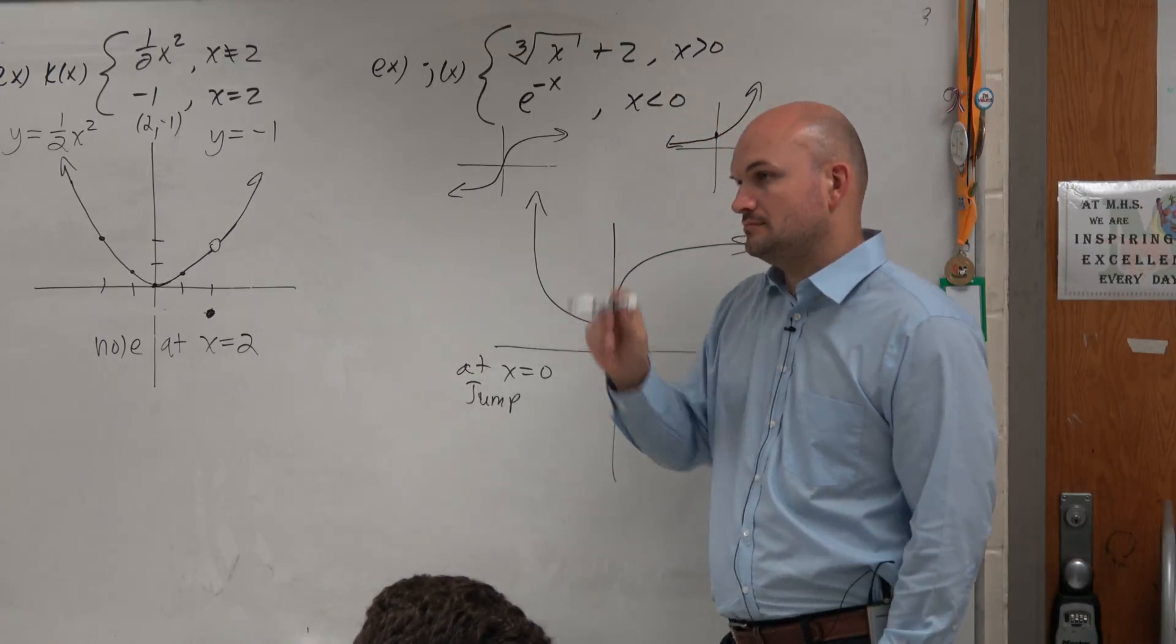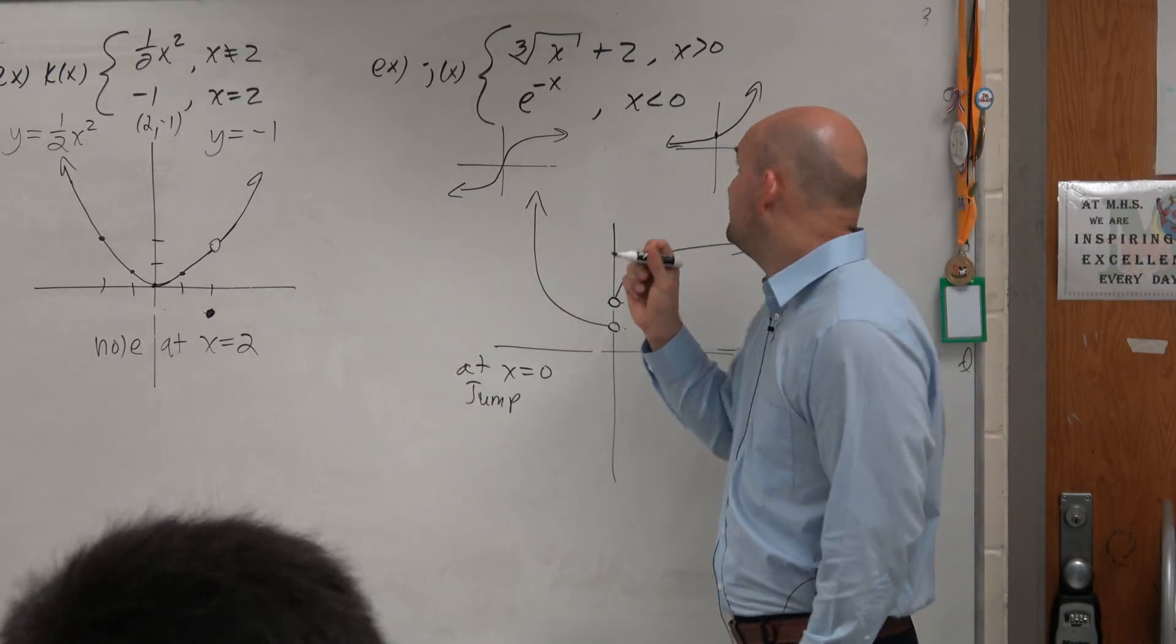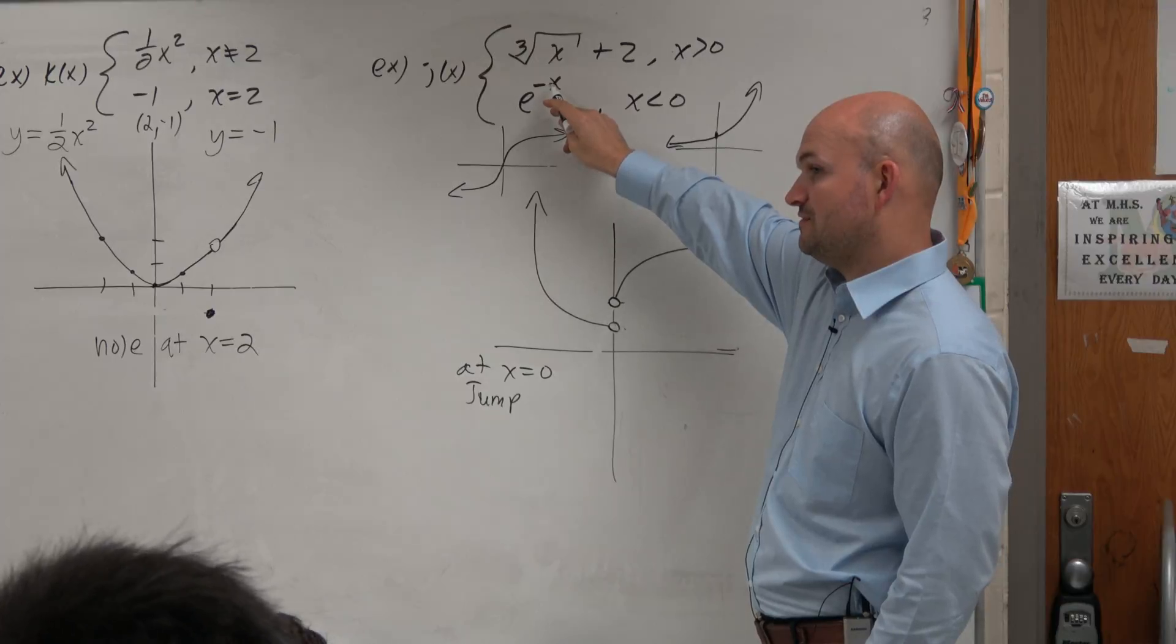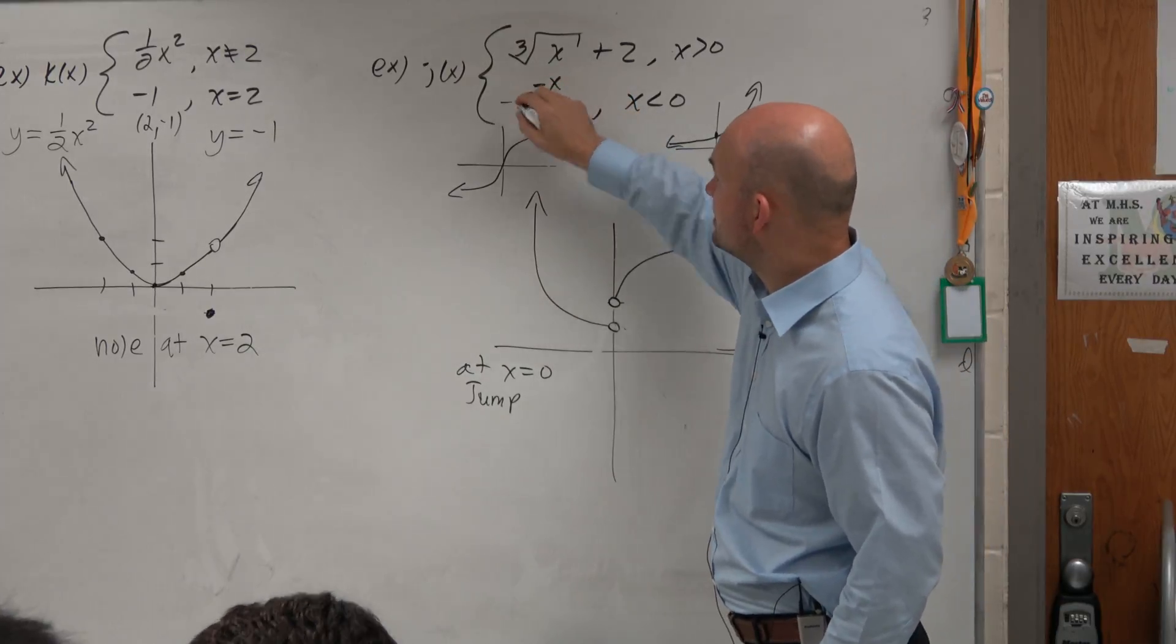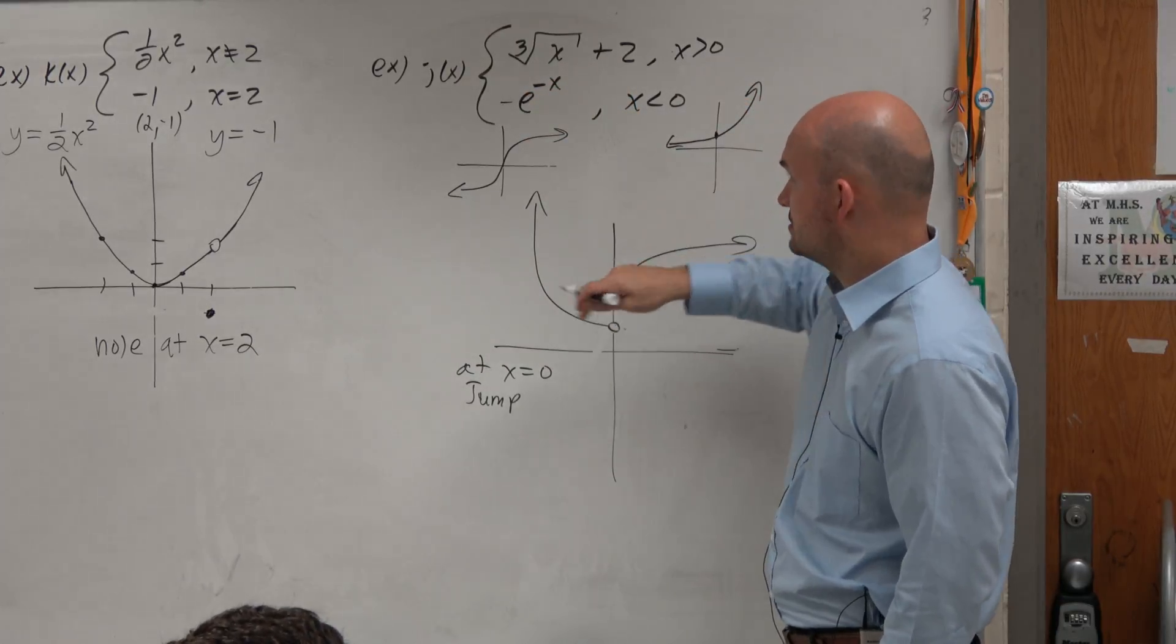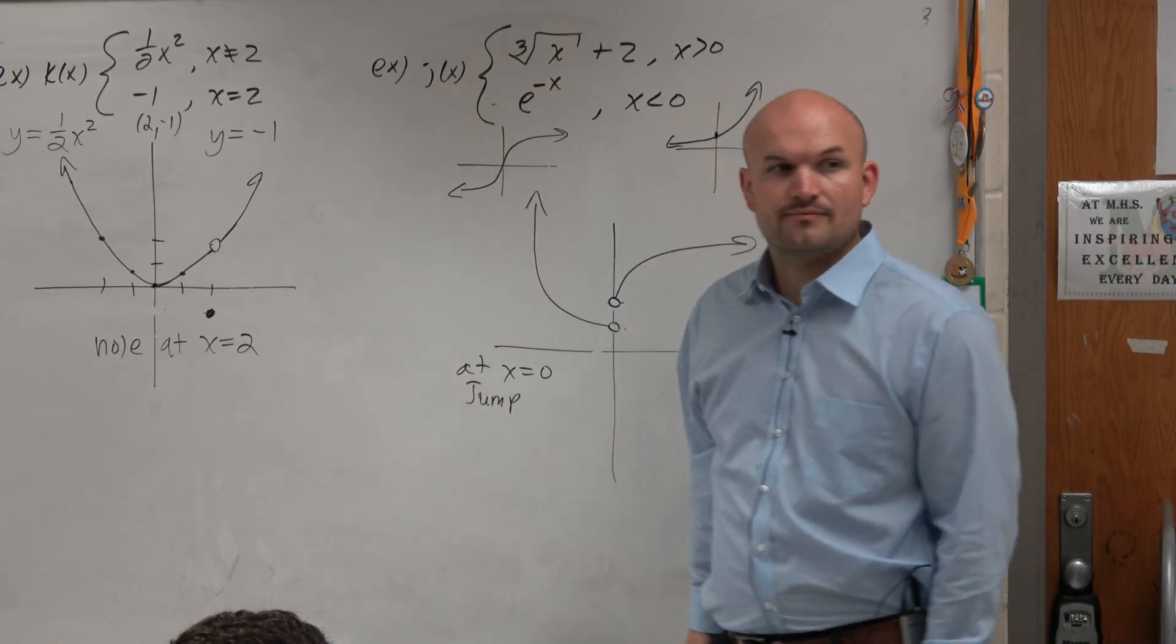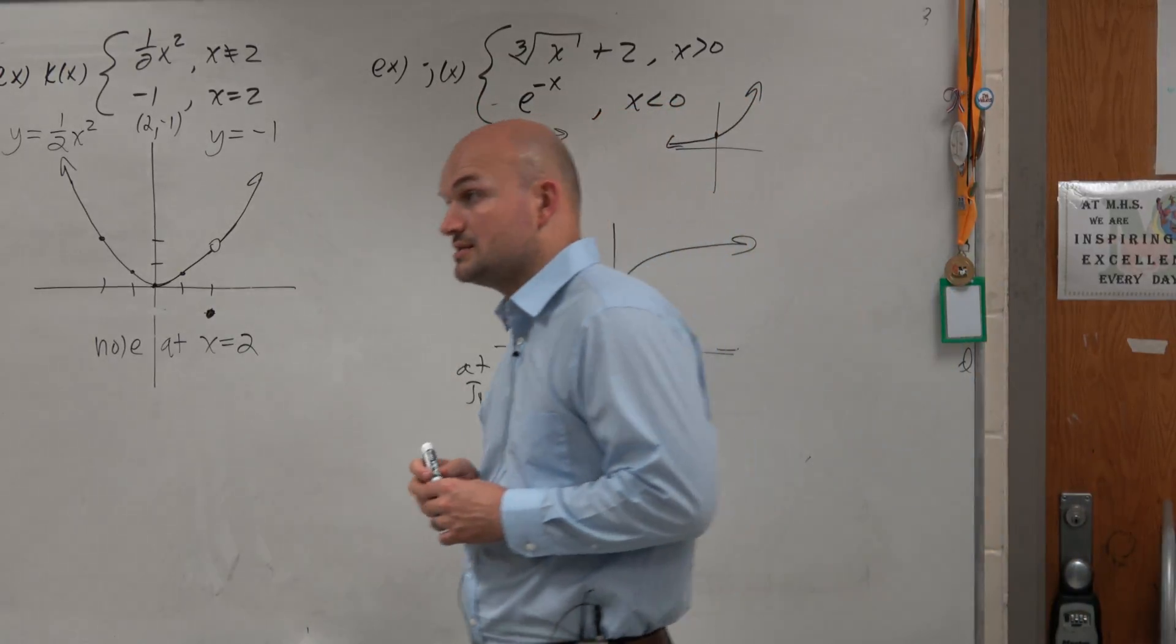Wait, why did it flip the function? Because the negative is inside the function. If it was a negative outside the function, you'd reflect about the x-axis. Any other questions?